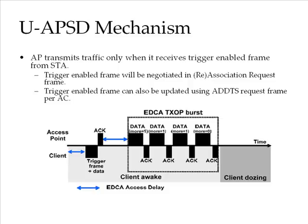Legacy power save methods do not provide good power savings for periodic bi-directional data traffic consisting of short frames like VoIP. The time to deduce that there are no outstanding queued frames from the AP is usually much longer than the time period between successive VoIP frames, so the station does not go to power save mode during a VoIP call. To handle this situation better, the UAPSD mechanism was formulated as part of 802.11e.